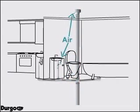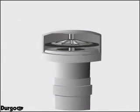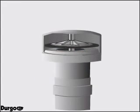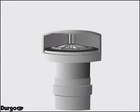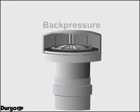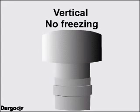When negative pressure builds, the Durgo air admittance valve opens and allows air into the sewer system. When the negative pressure has settled, the Durgo air admittance valve is closed and sealed. In case of back pressure, the sealing element of the Durgo air admittance valve remains tightly closed. The Durgo air admittance valve is a non-mechanical valve that operates by gravity.